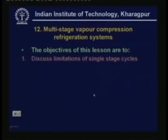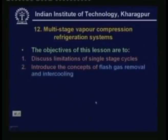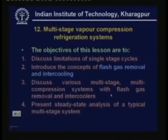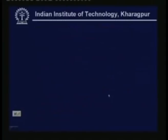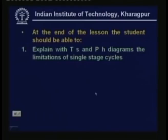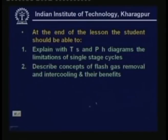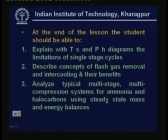Welcome back. In the last two lectures we discussed single stage vapor compression refrigeration systems. In this lecture I shall introduce multistage vapor compression refrigeration systems. The specific objectives are to discuss limitations of single stage cycles, introduce concepts of flash gas removal and intercooling, discuss various multistage multicompression systems with flash gas removal and intercoolers, and present a steady state analysis of a typical multistage system. At the end you should be able to explain limitations of single stage cycles using TS and PH diagrams, describe concepts of flash gas removal and intercooling and their benefits, and analyze typical multistage multicompression systems for ammonia and halocarbons using steady state mass and energy balances.